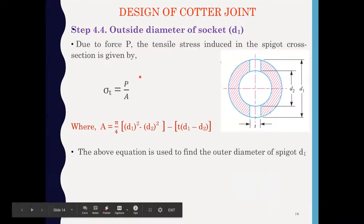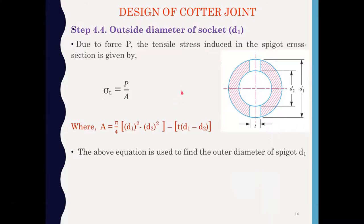Step 4.4: Outside diameter of the socket D1. The socket is also subjected to tensile failure, so sigma_t = P / A. Here D2 is the inner diameter of the socket, D1 is the outer diameter of the socket, and T is the thickness of the slot. By putting the values of D2, T, P, and sigma_t we can find D1, the outer diameter of the socket.